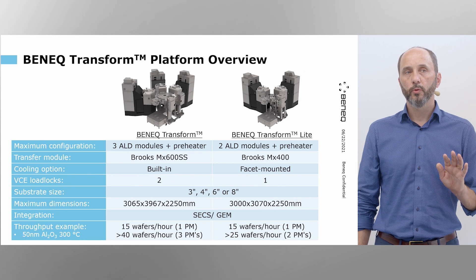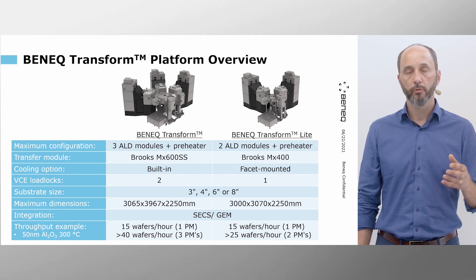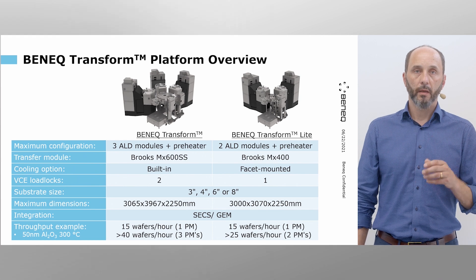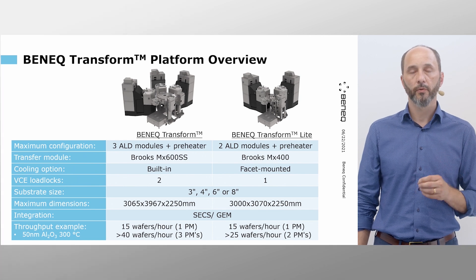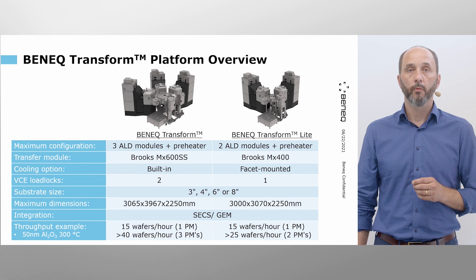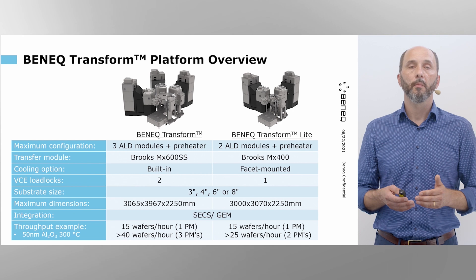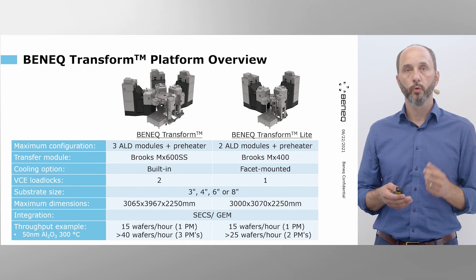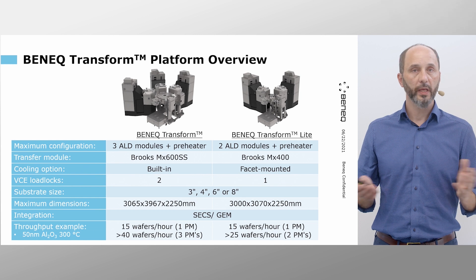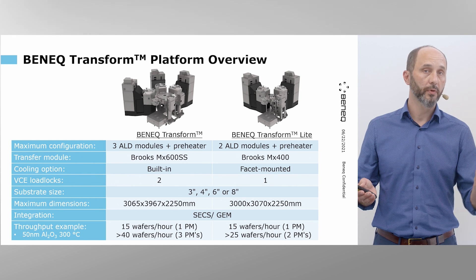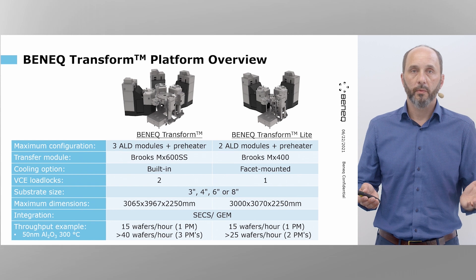The platform comes with two mainframes. Benek Transform is able to house up to three process modules in addition to the preheater. Benek Transform Light is a smaller version with an MX400 transfer module that can equally house the same process modules — thermal or plasma — but is limited to up to two process modules in addition to the preheating module.